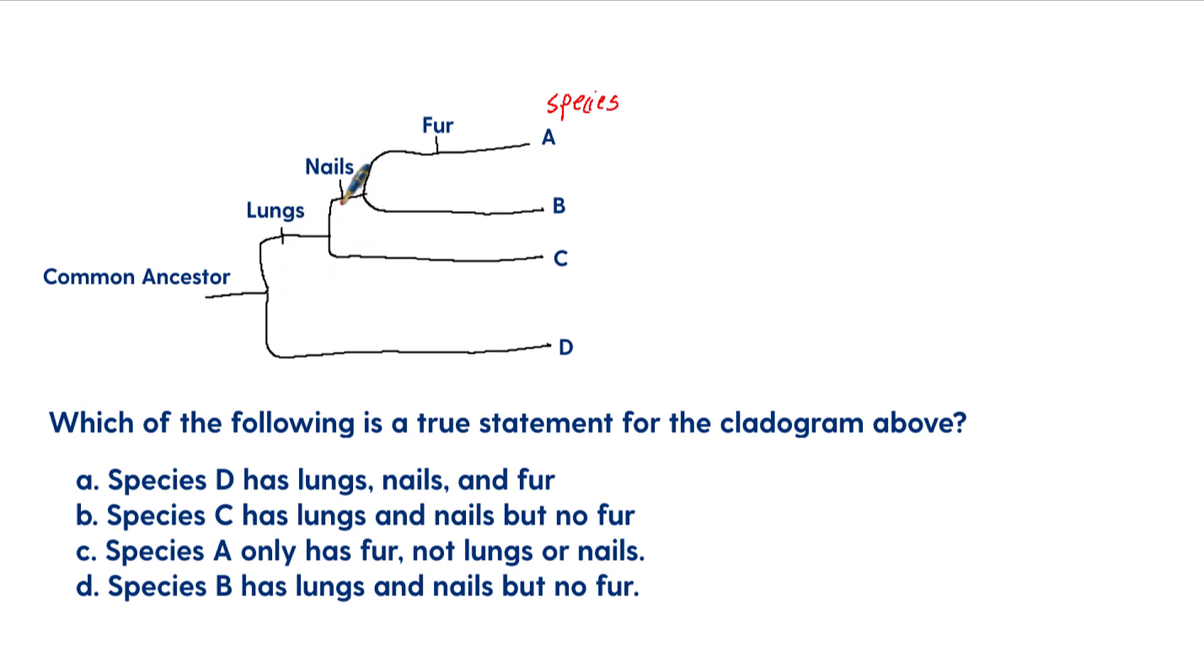And then if you look at this one, C branches off because it doesn't have nails, like fingernails or claws, however you want to think of it, right? And then there's another branch off. B does have lungs, does have nails, but doesn't have fur. And species A has lungs, has nails, and has fur, where species D has none of those. And so you're still being able to compare the relationship between the different species. But now we're looking at the actual characteristics of those. So let's go through the different statements.